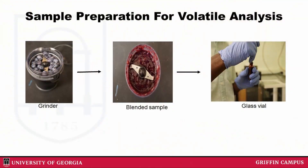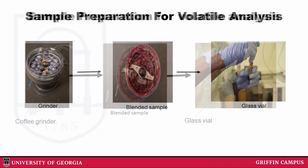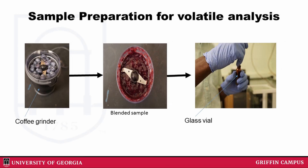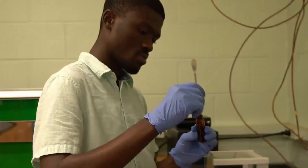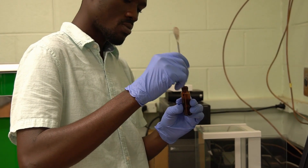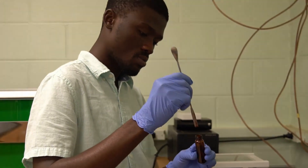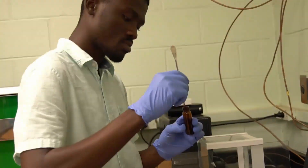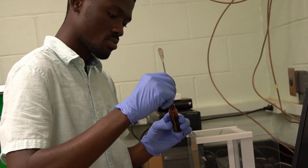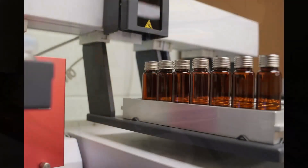To prepare the sample so that we are able to analyze for volatiles, we blend them to get a puree. Two grams of the puree is transferred into a 20 ml glass vial, and 10 ml of internal standard is added. The sample is then tightly capped and arranged on the GC tray for analysis.